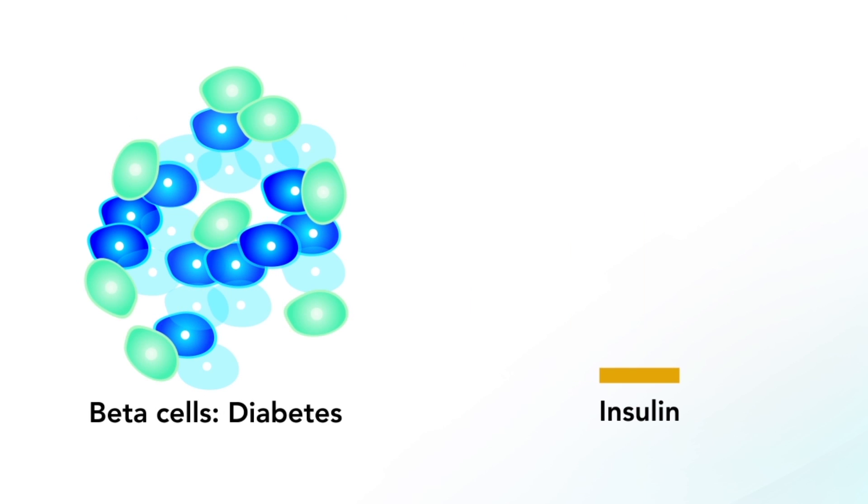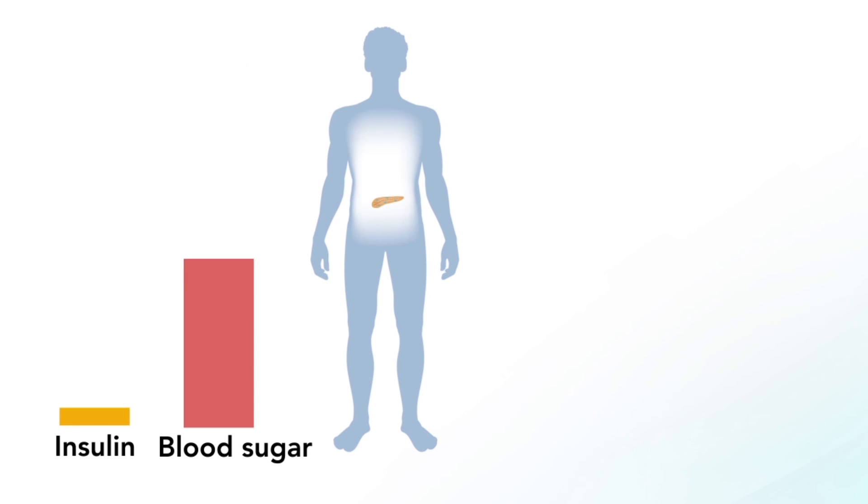But in people with diabetes, beta cells die over time, removing the body's only source of insulin. Without enough insulin, blood sugar rises, damaging the heart, kidneys, eyes, and more.